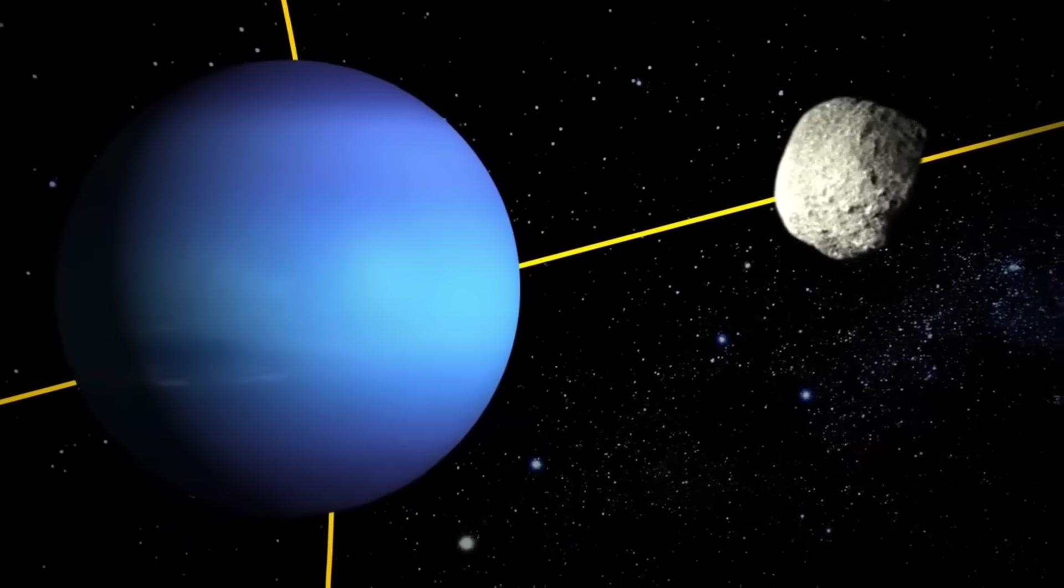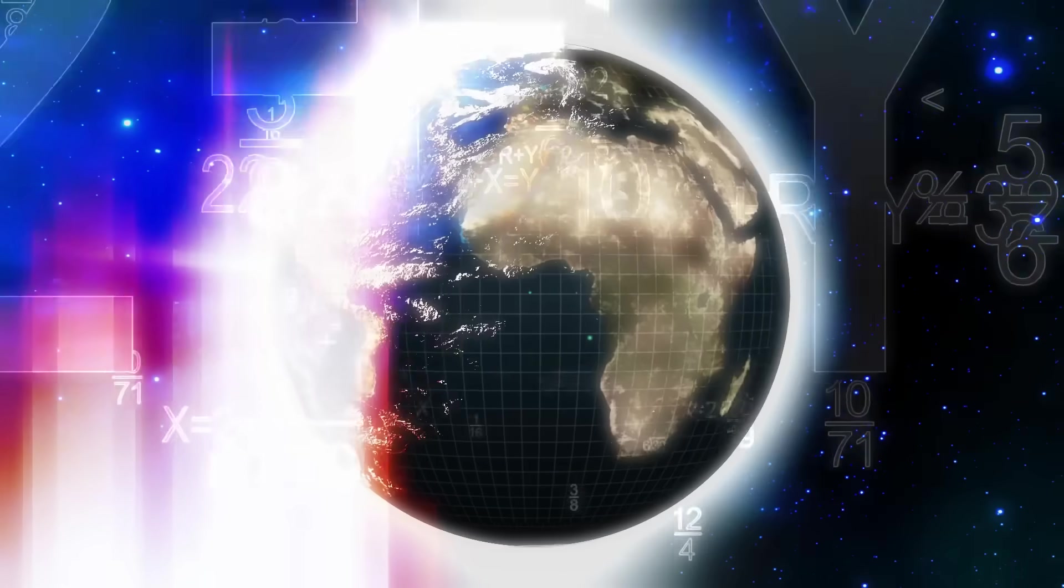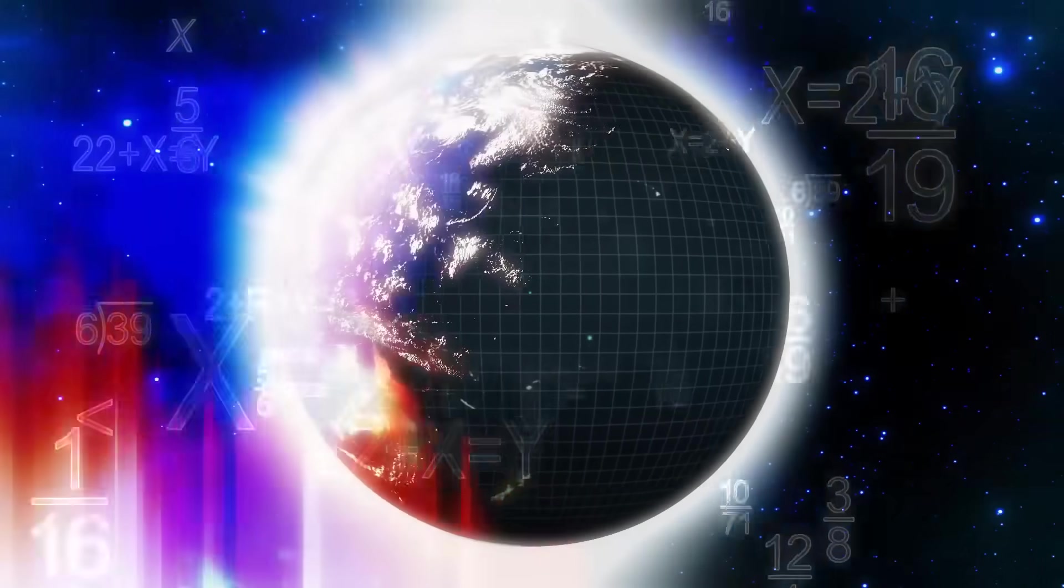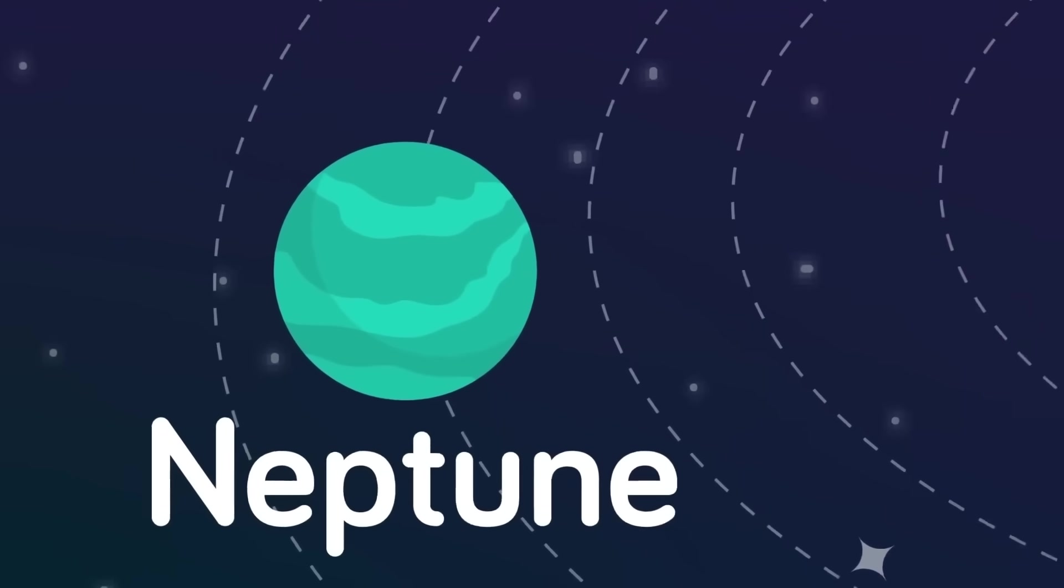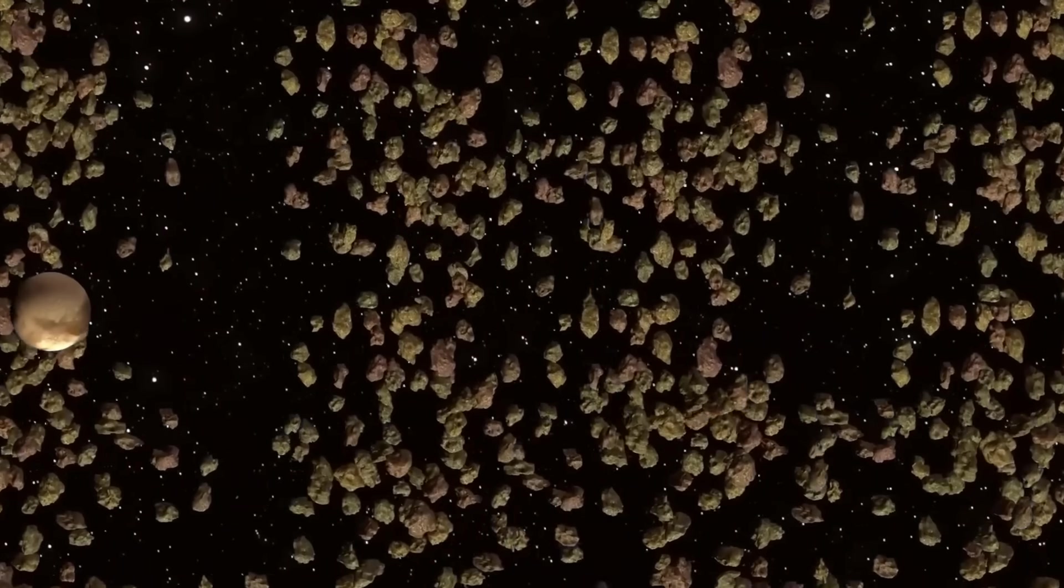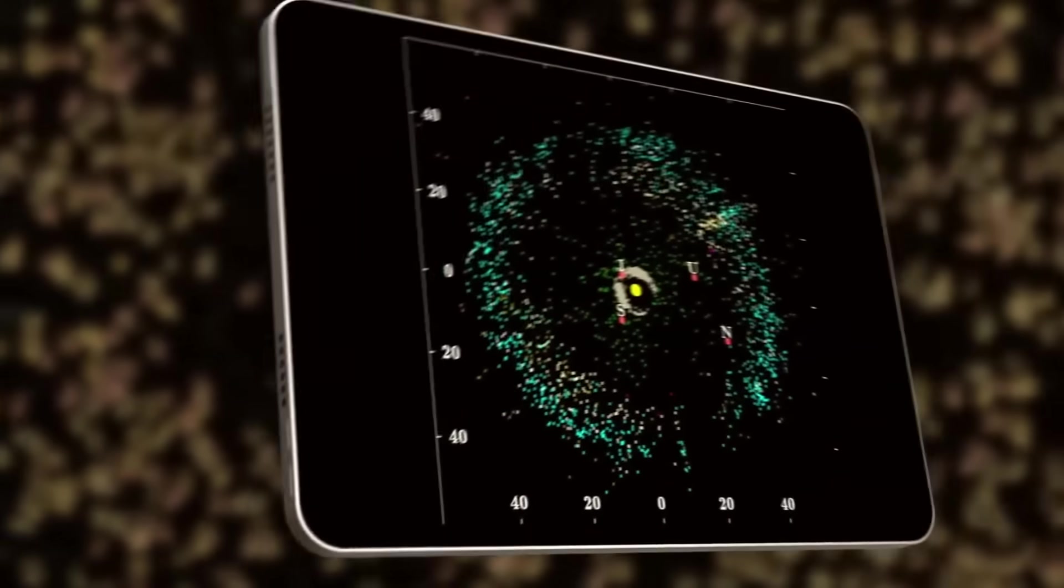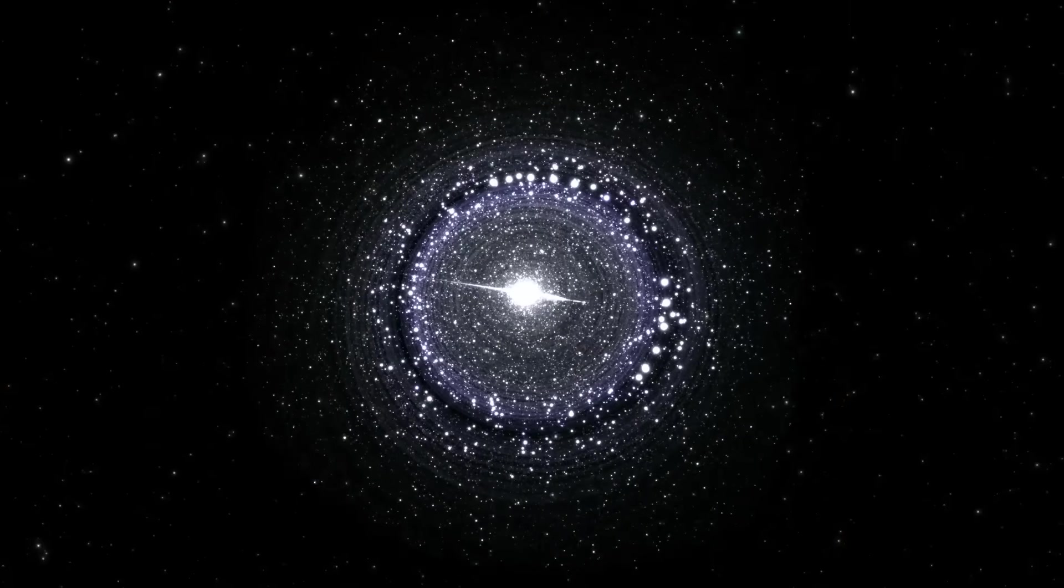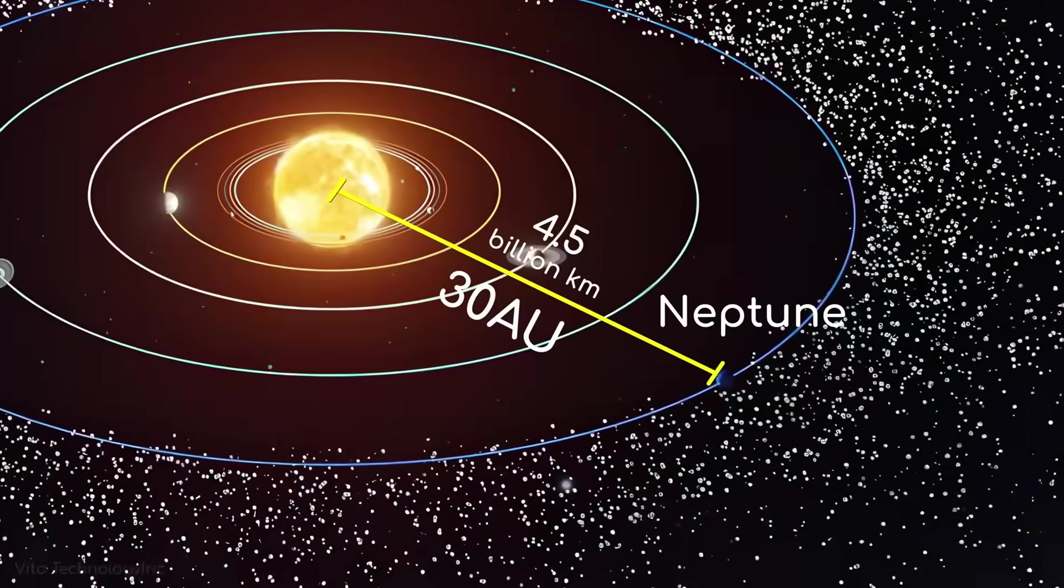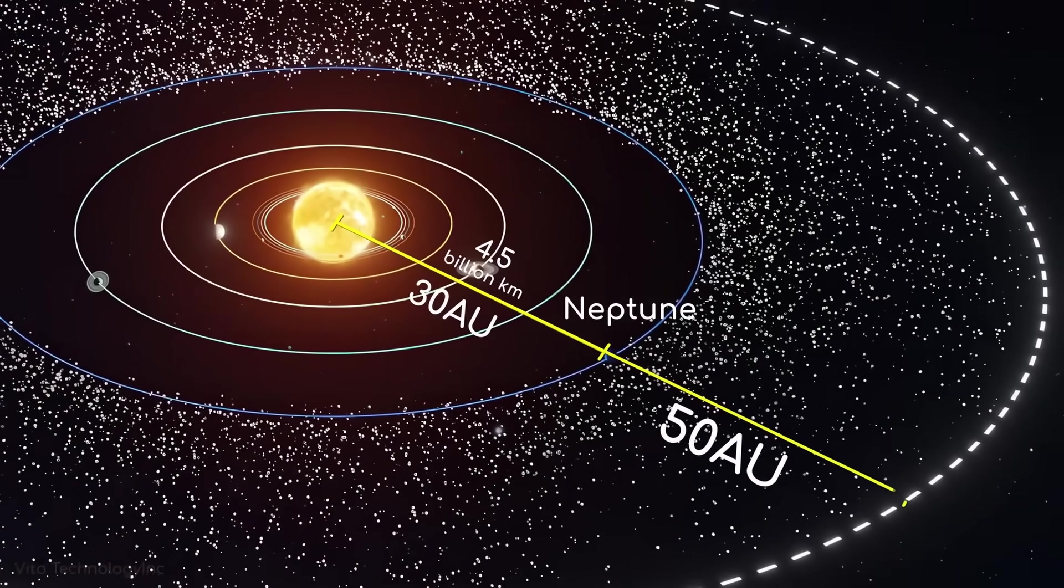Before we dig deeper, let's revisit the history of Planet 9. First proposed in 2016 by astronomers at Caltech, the Planet 9 hypothesis emerged as a solution to a puzzle: Why do many trans-Neptunian objects have orbits that are clustered in one direction? The idea was that an unseen planet, a massive distant body, was exerting its gravitational influence, shepherding these objects into similar paths. For years, astronomers searched for direct evidence of this elusive world, but the vast distances and dim light made it nearly impossible to capture with conventional methods.